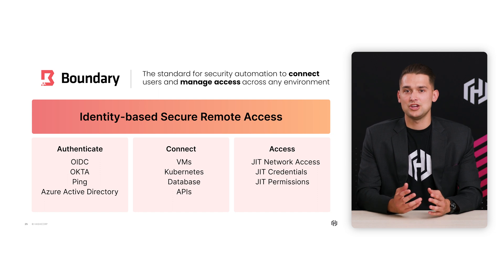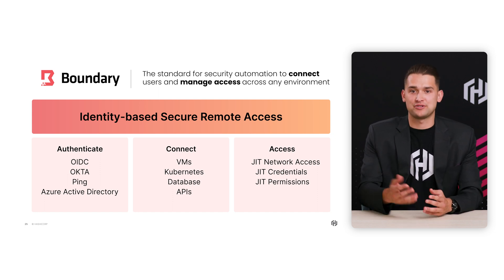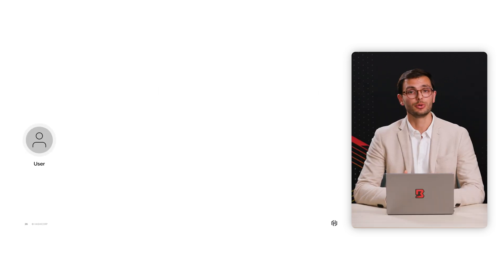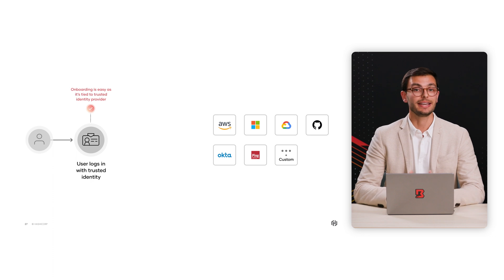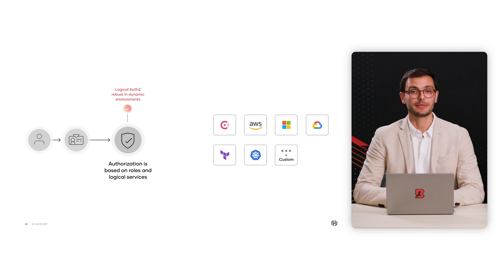So let's say that you're an actual user and your organization has provisioned Boundary for you — would you be able to walk us through what that workflow would look like? Definitely. So let's say I'm a user connecting to a target. Maybe I'm SSH-ing to a Linux VM in Azure. I log in with my identity provider — that could be any OIDC or LDAP provider, such as Microsoft Entra ID, the IDP formerly known as Azure Active Directory, or maybe Okta. Based on my identity and permission claims, I'm given access to a Boundary role that granularly controls what services I can connect to.